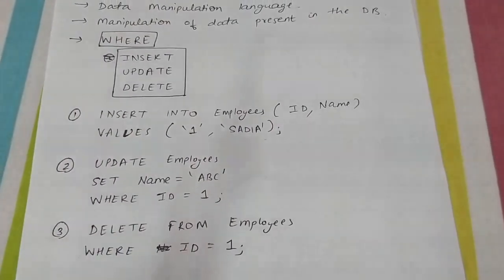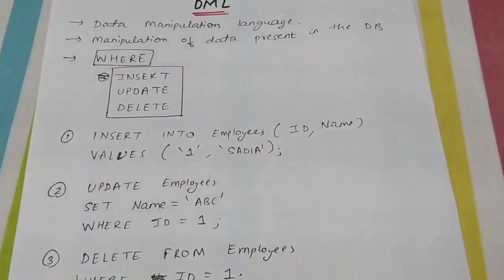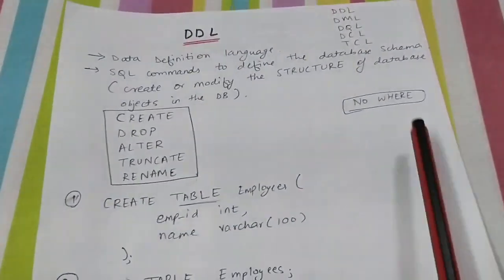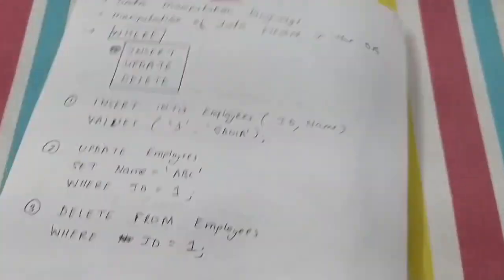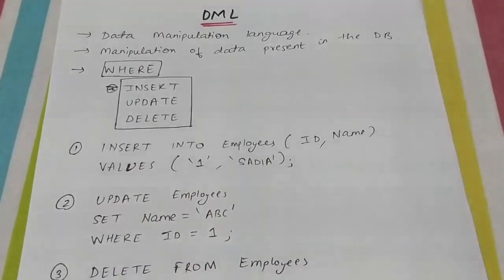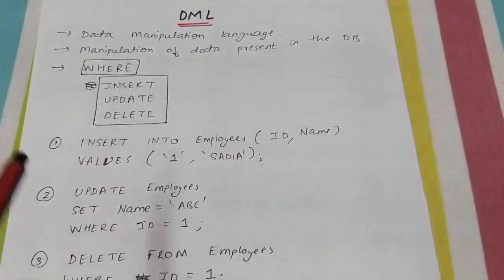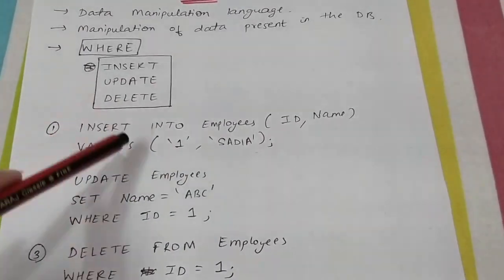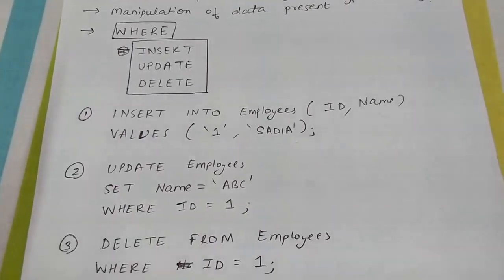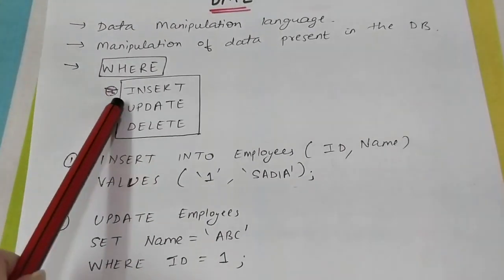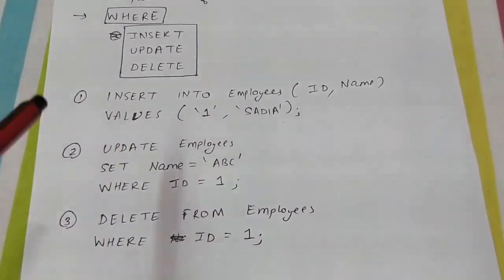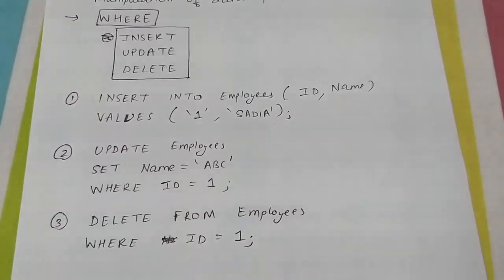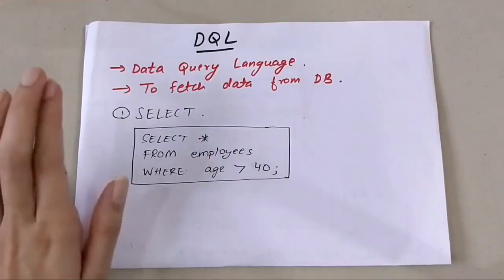Two things to remember about DML: first, you never write the word TABLE — unlike DDL where you write CREATE TABLE or DROP TABLE, in DML you simply write INSERT INTO employees, UPDATE employees, DELETE FROM employees. Second, you can use WHERE in DML — specifically in UPDATE and DELETE — but not in INSERT.